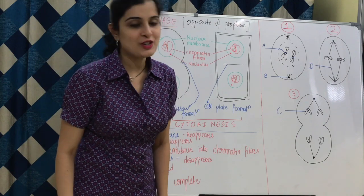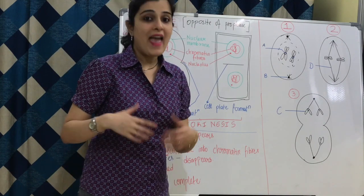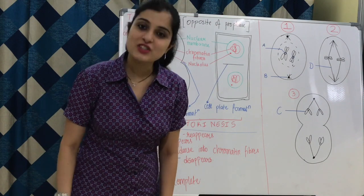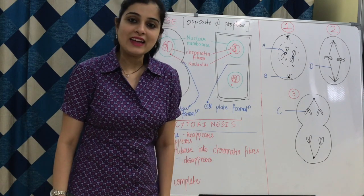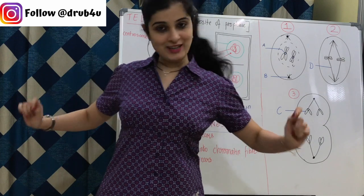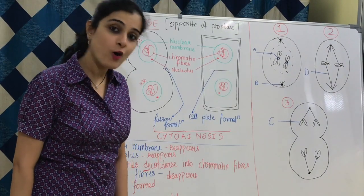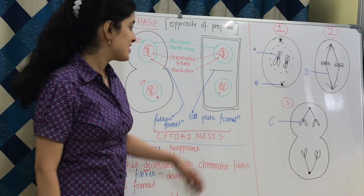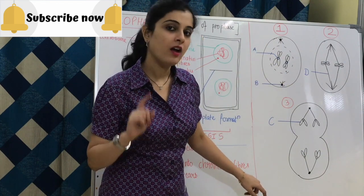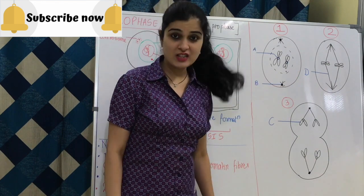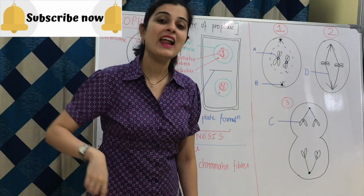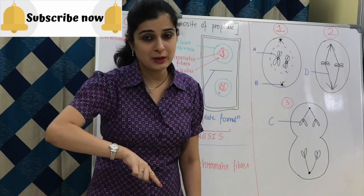I hope the cell division concept is clear. Any other concept you find difficult, you can post it in the comment section below — I will go with the majority and take the concept which is tedious for many of you. To know how much you have actually understood, take up this test: there are three diagrams given — 1, 2, and 3. Identify the stage in which each cell is, and label parts A, B, C, D. Try to solve the questions on your own. I will link the answers in the description box below. Thank you.